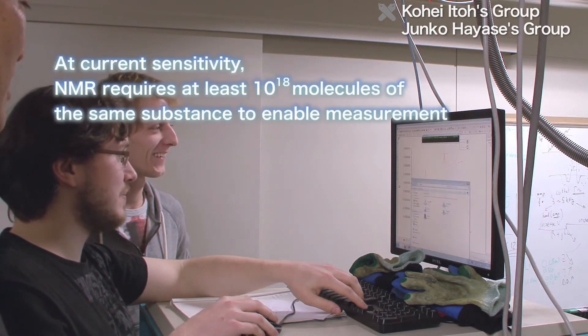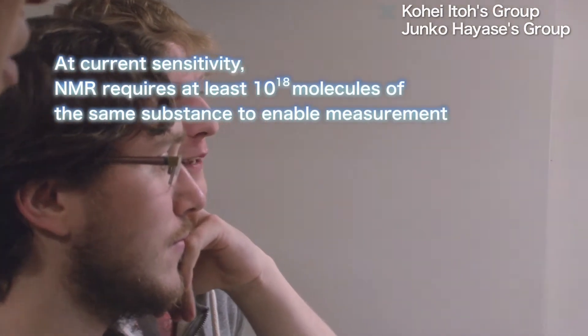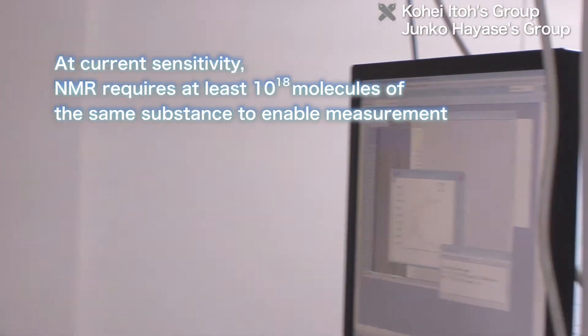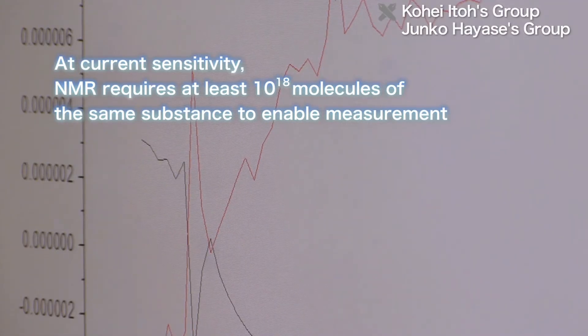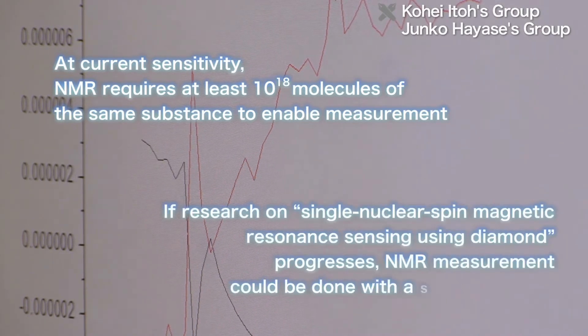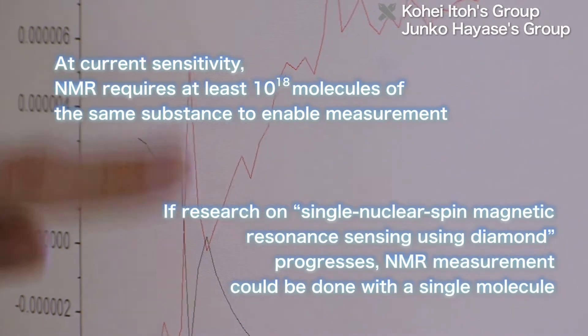At its current sensitivity, NMR requires at least 10 to the 18th power molecules of the same substance to enable measurements. But if the Ito lab's research progresses, NMR measurement could be done with a single molecule.